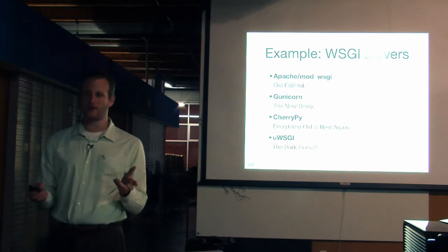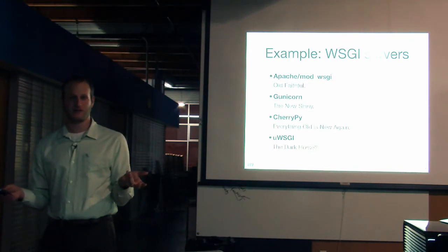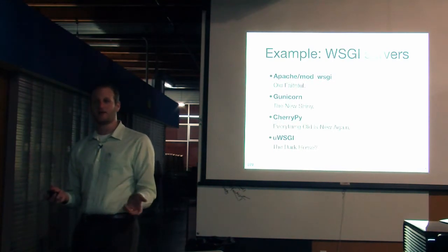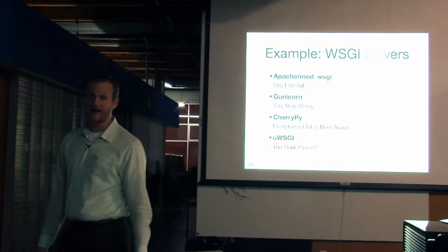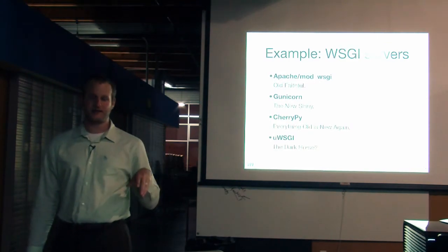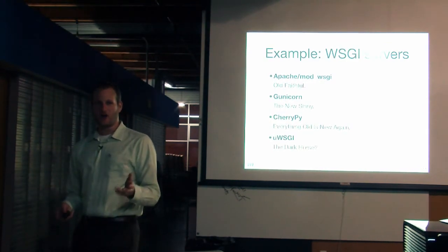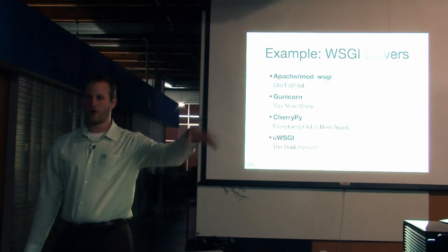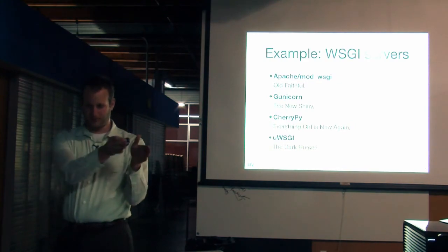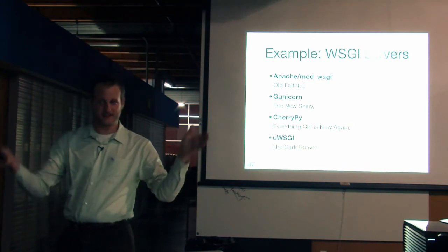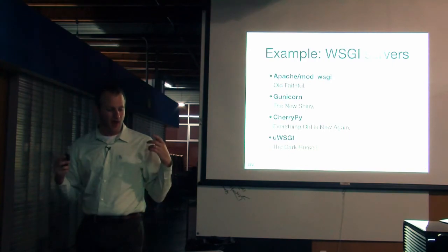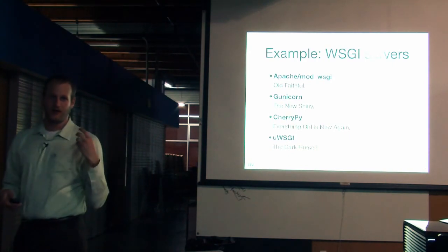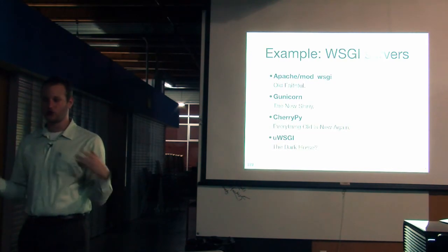And you've got other things like uWSGI, maybe a dark horse, kind of coming from behind. What's really great about a standard like WSGI is that I can and have switched between these on a moment's notice. You see that Apache's doing something weird. Well, why don't you try Gunicorn on one of your web servers? Point a portion of traffic at it and sort of see how it behaves next to other things. I wouldn't consider entering into a space that didn't have this sort of depth, this sort of choice.